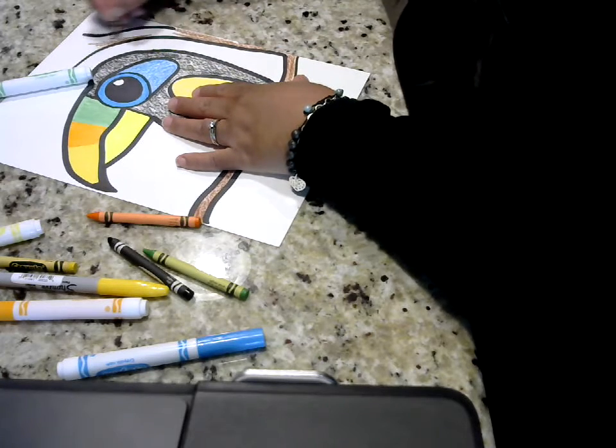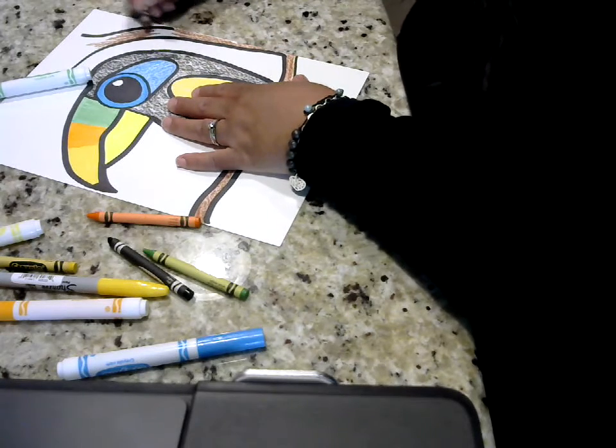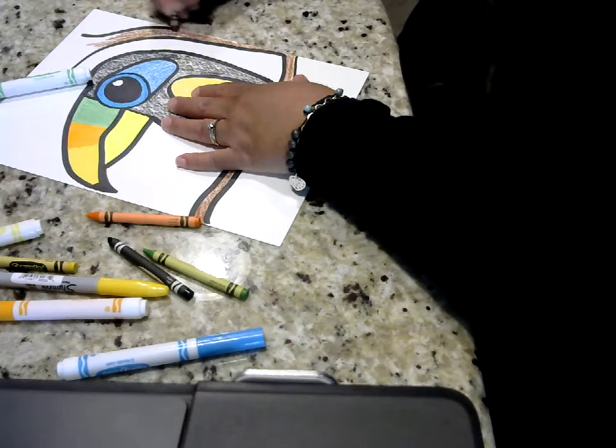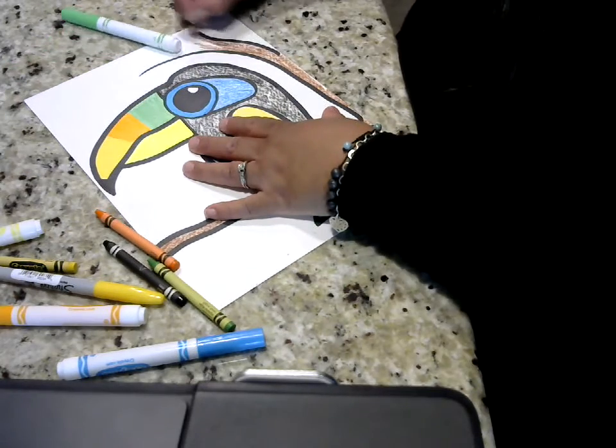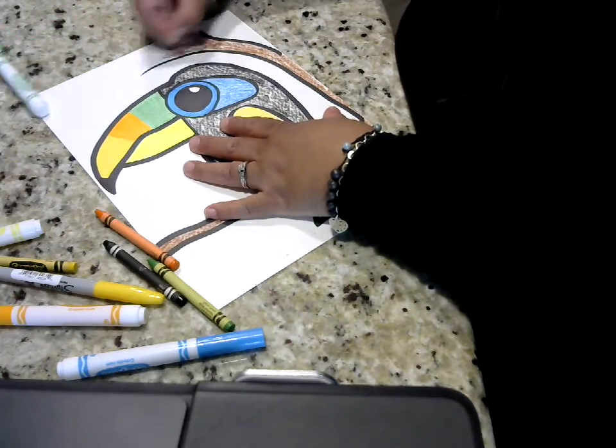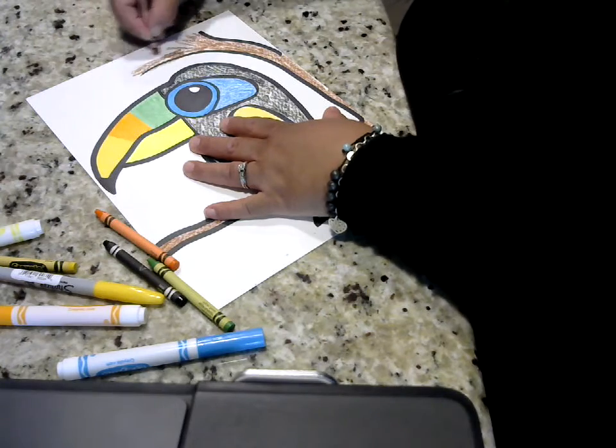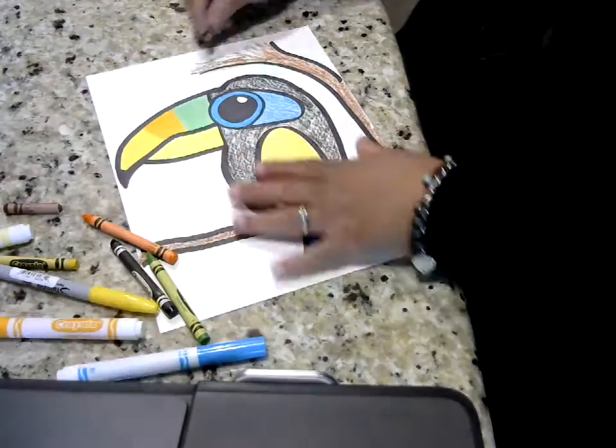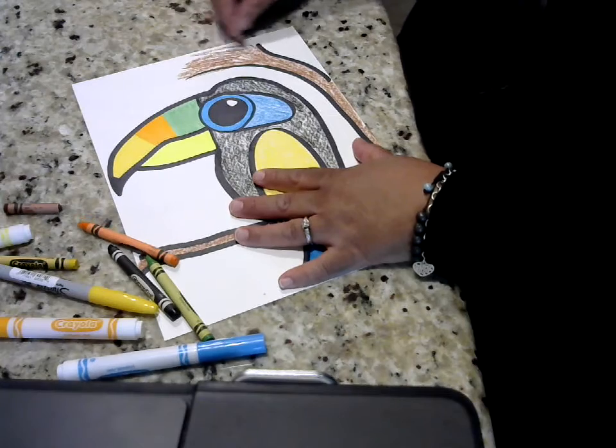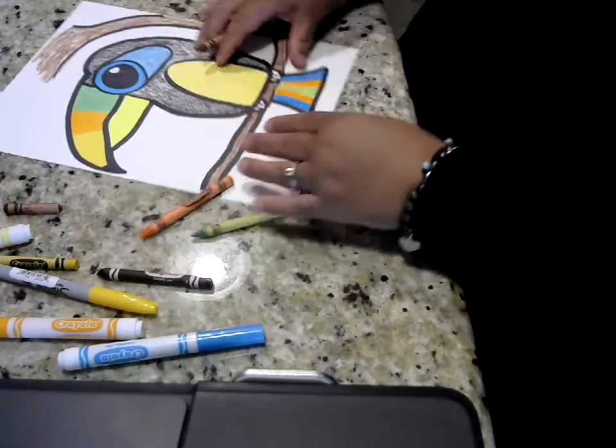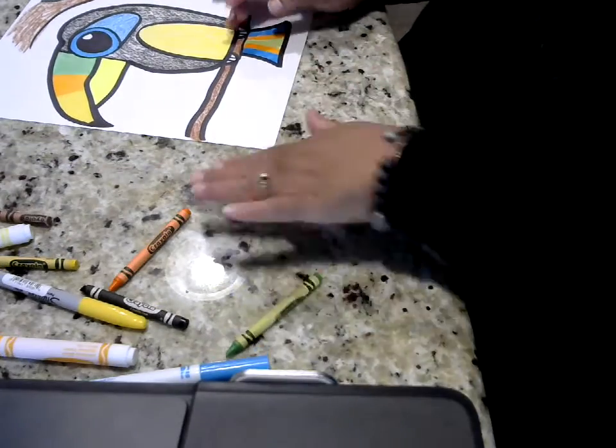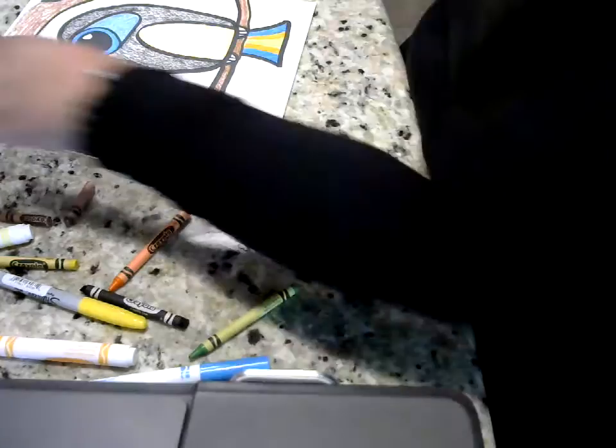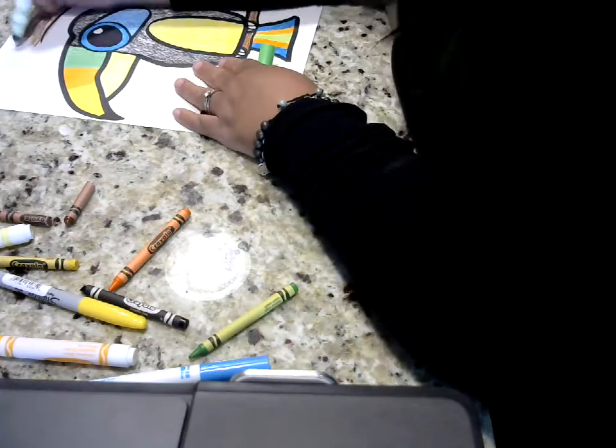And then they eat, they like to eat fruit off the trees. Oops, my crayon broke there. Sorry. Okay. So then maybe you can do some green leaves over here.